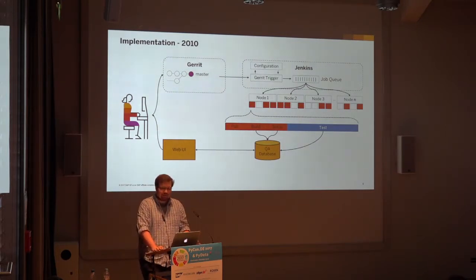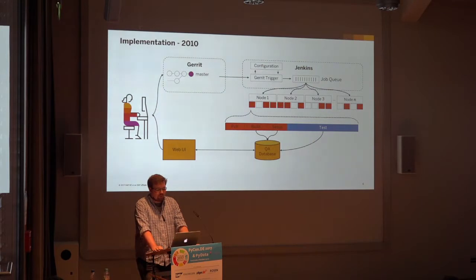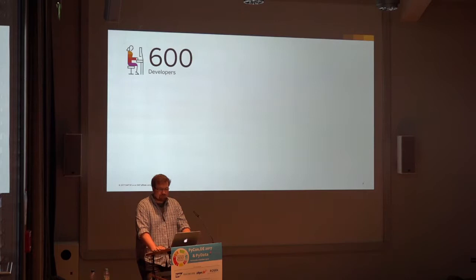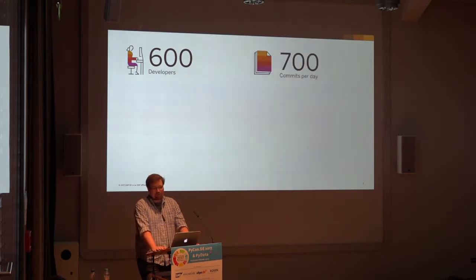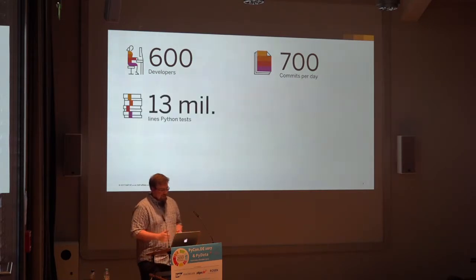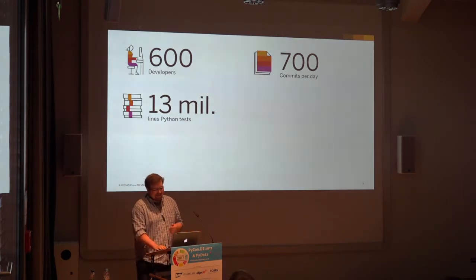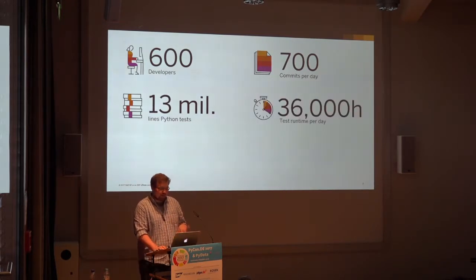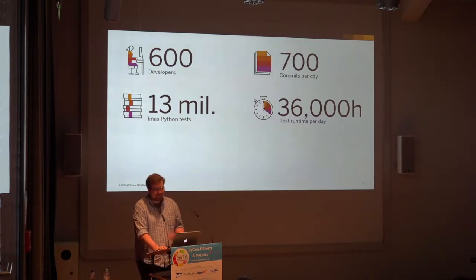This was 2010, and luckily for us HANA turned out to be a very nice product for our customers — a lot of them bought it and we had to scale. We scaled up to 600 developers currently working on the core HANA codebase, producing around 700 commits per day that need to be tested. We have 13 million lines of Python testing code. The main problem is: if we ran the test suite now, we would have to wait for years because it's so huge.